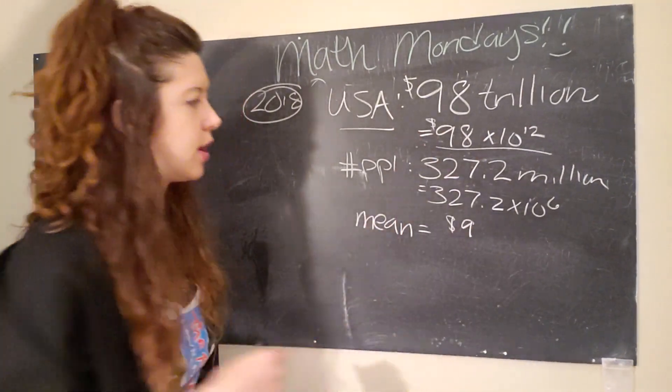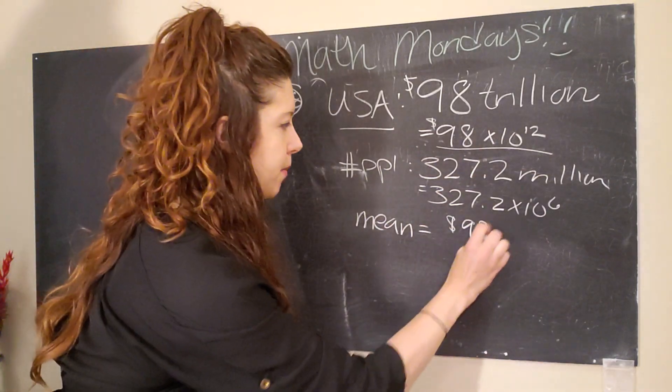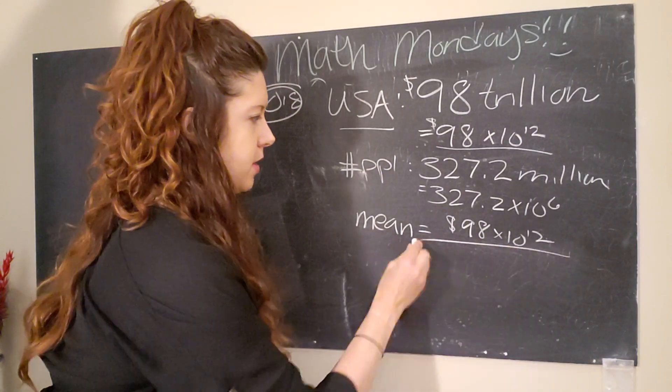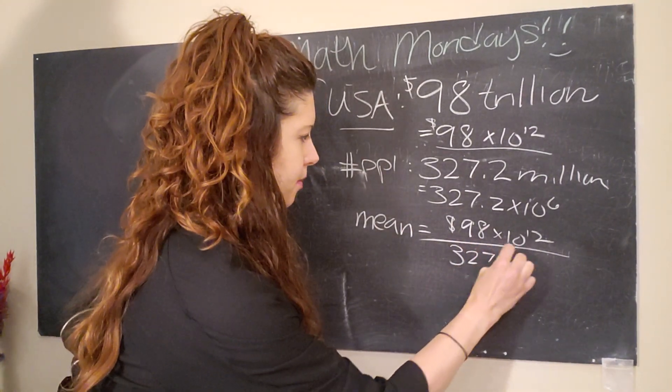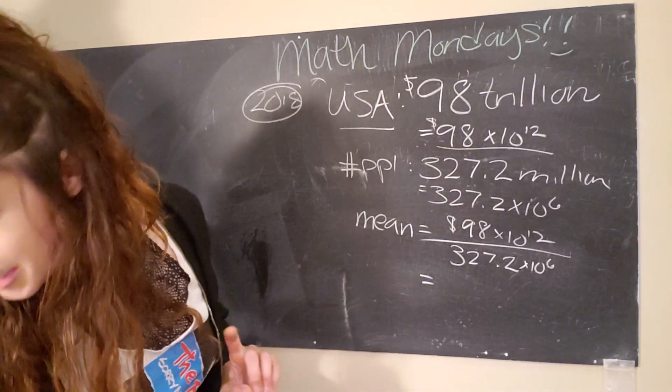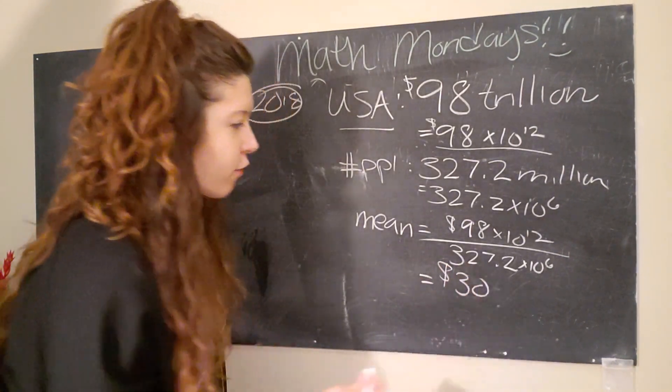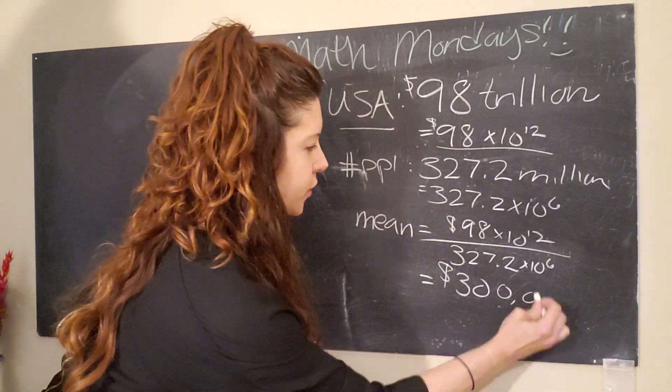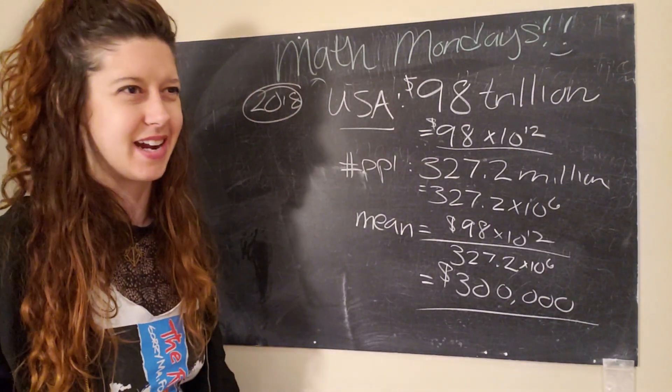Anyway, so the average wealth of an American would just be the total value of American wealth, 98 trillion dollars, divided by the total number of people, 327.2 times 10 to the 6th. And so, what we get, I am not going to do this in my head, we get about the average or mean wealth of an American is about $300,000. I'm rounding up a tiny bit. It's like 299 something something.